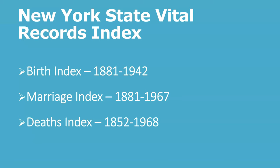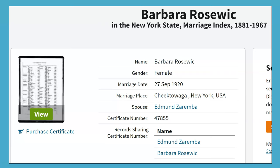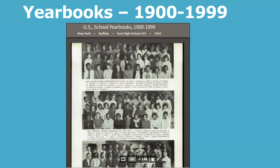Indexes to New York State births, deaths, and marriages are searchable in Ancestry. Certain locations are not covered in the New York State Vital Records Index, such as New York City, which has separate indexes. The cities of Buffalo, Albany, and Yonkers were not included for a number of the early years. These indexes provide the name, date of event, location of event, and state certificate number. The marriage index provides the spouse's name. With this information, the certificate could be ordered through the State Vital Records Office or the city or town where the event took place. Ancestry also has a great yearbook collection dating from 1900 to 1999.